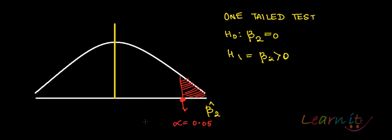Instead of looking for 0.05 upon 2, okay, that is 0.025, you will be looking for alpha equals to 0.05, okay.